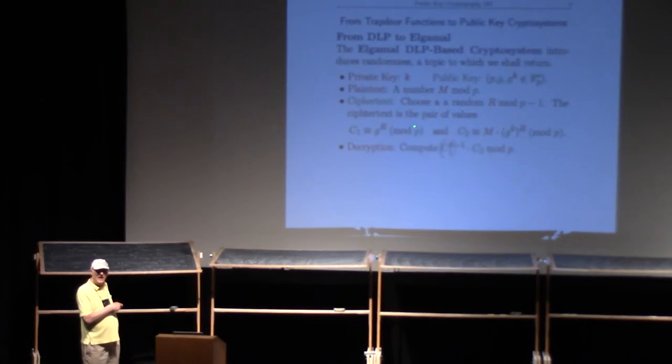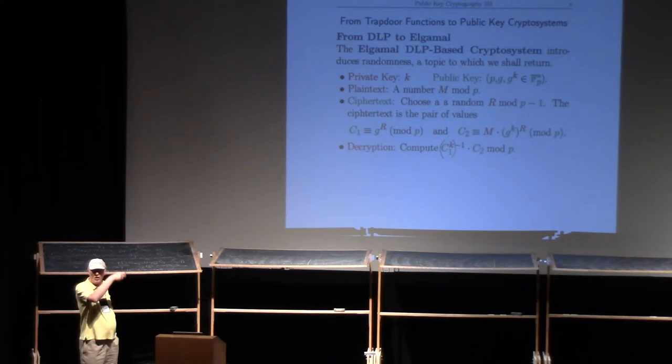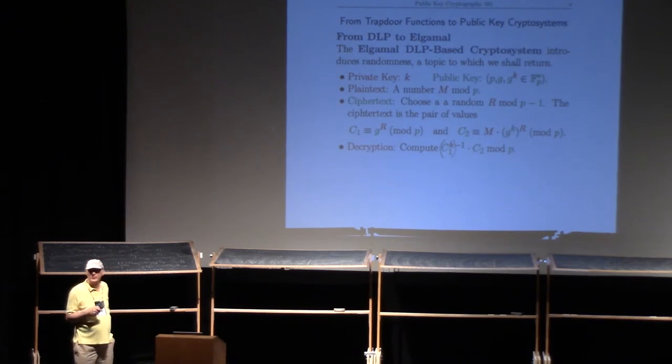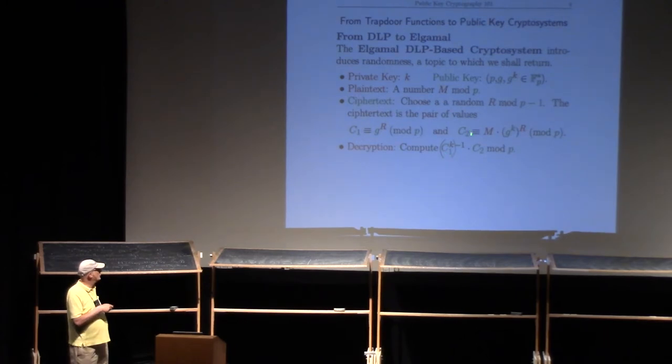Alice cannot figure out what R is, because she knows G to the R but finding R is the discrete log problem. Alice and Eve both see c1. Bob also takes G to the K, which Alice published, raises that to his secret power, and multiplies it by his message, reducing mod P. How does Alice decrypt? She takes c1 that Bob sent her, raises it to her secret power, inverts it mod P using the Euclidean algorithm, multiplies it by c2, and reduces mod P to get Bob's message back.